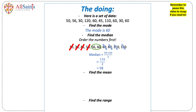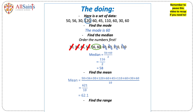To find the mean you add together all the numbers in our list and then you divide by how many numbers there are. There are 10 numbers, so you add all of them up, you get 621, divide that by 10, you get 62.1.